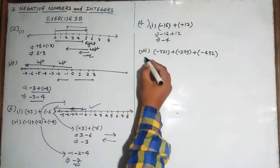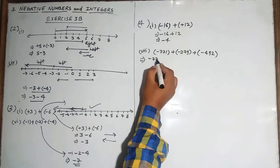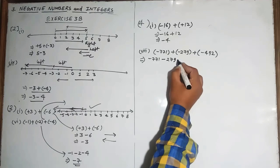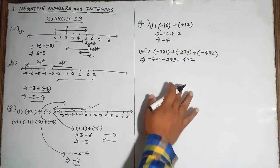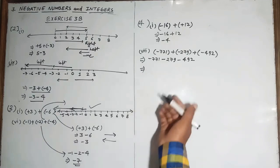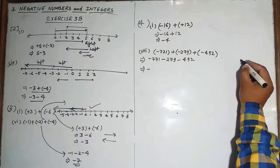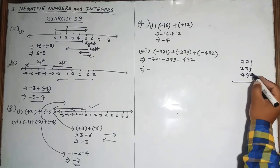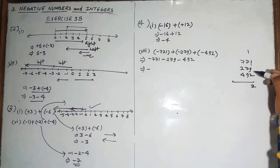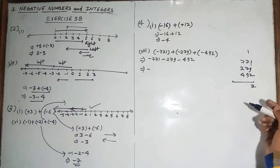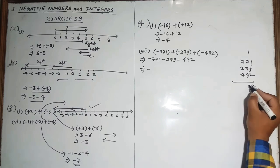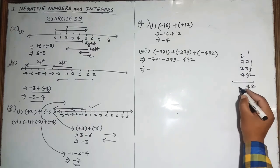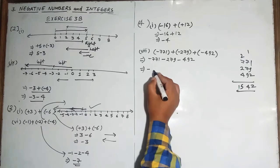The eighth part is −771 + (−279) + (−492). All three numbers carry a negative sign, so the answer will be negative and we simply add: 771 + 279 + 492. Adding: 9+1+2=12 carry 1; 7+7+9+1=24 carry 2; 7+2+4+2=15. The total is 1542, so the answer is −1542.